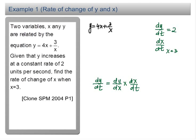So we proceed to find our dy/dx. We let y equal to 4x plus 3x power negative 1. So dy/dx equals 4 minus 3x power negative 2, which equals 4 minus 3 over x squared.